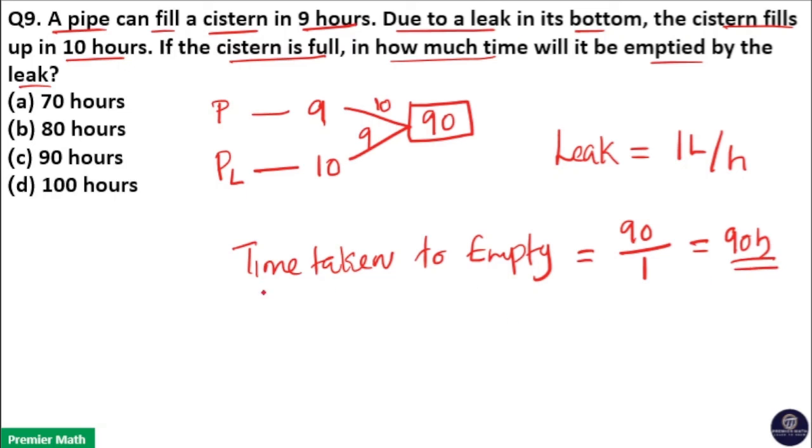90 hours is the time taken by this leak to empty this cistern. So option C is your answer.